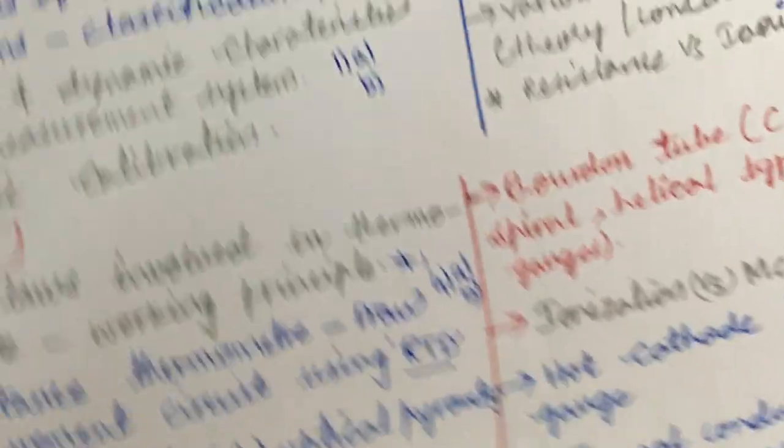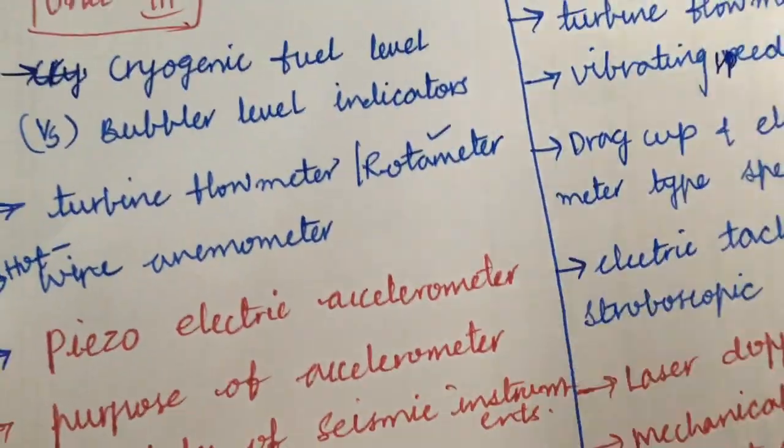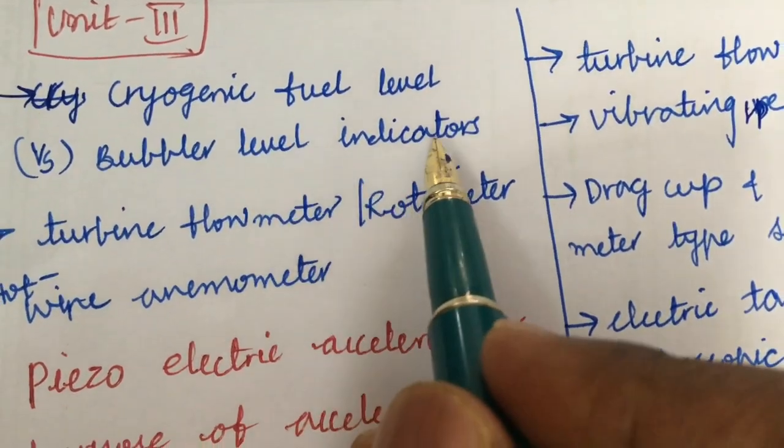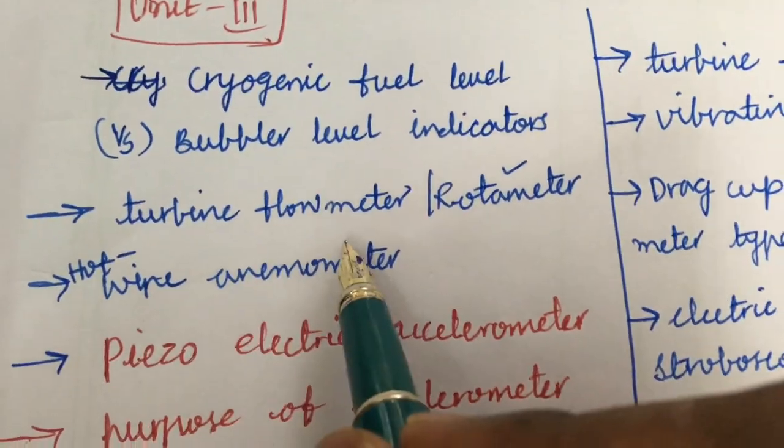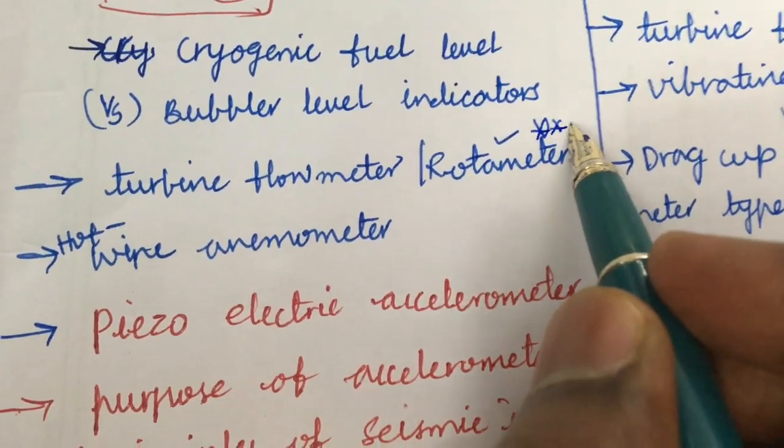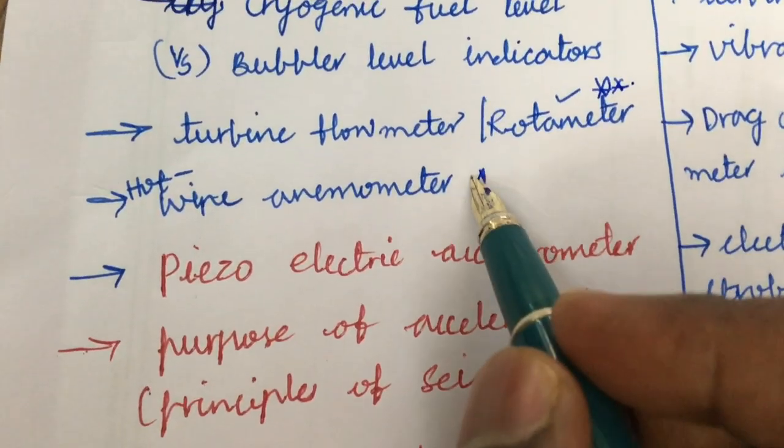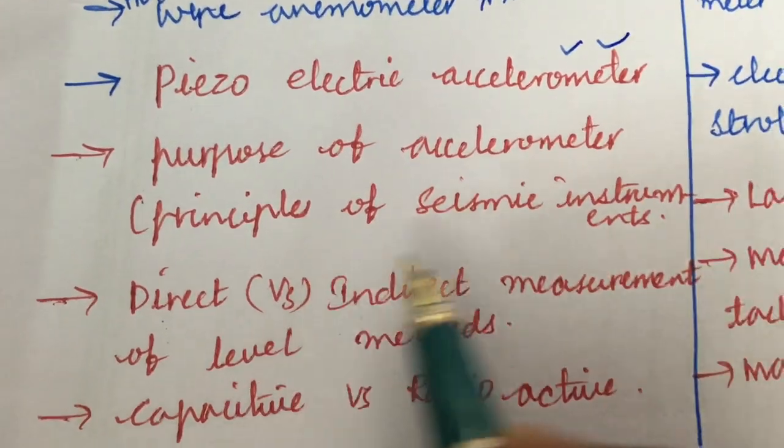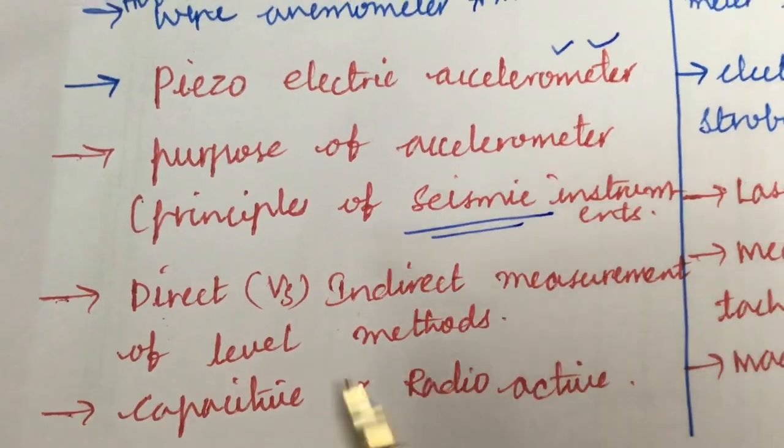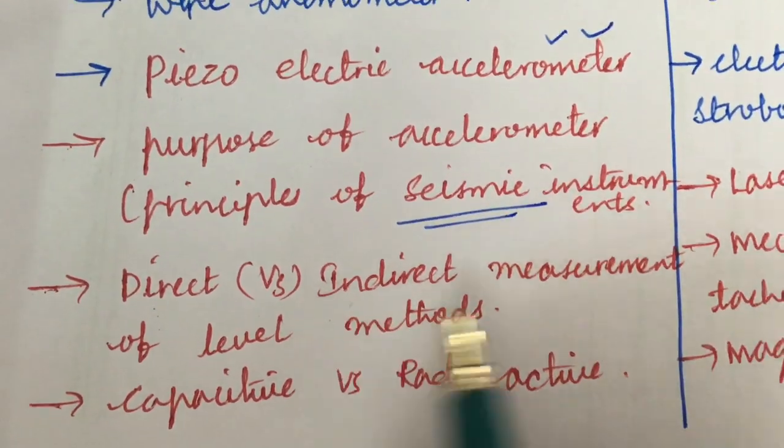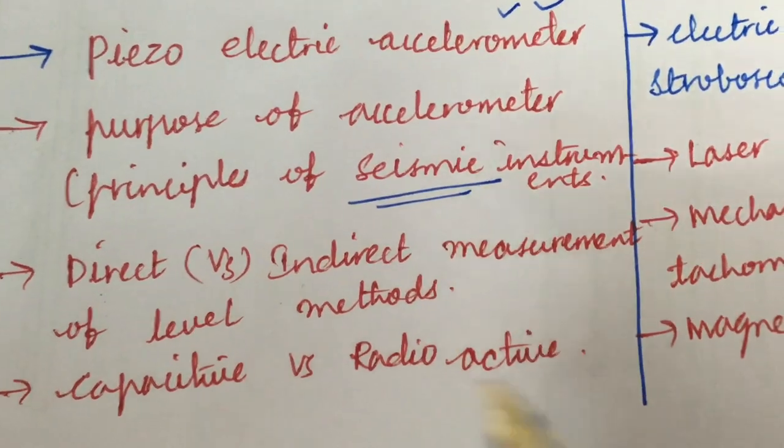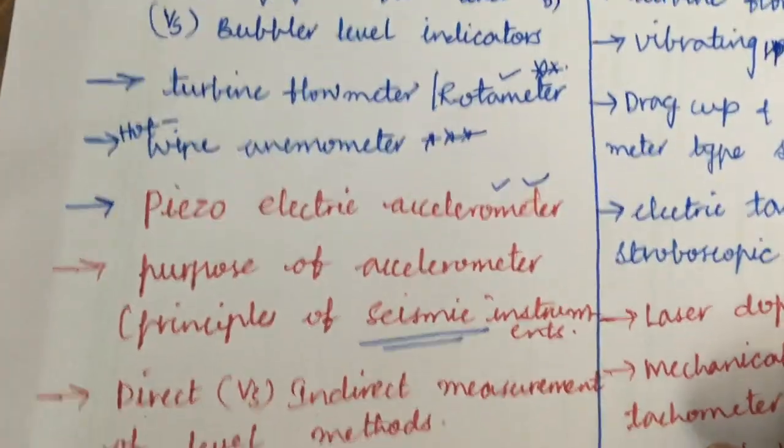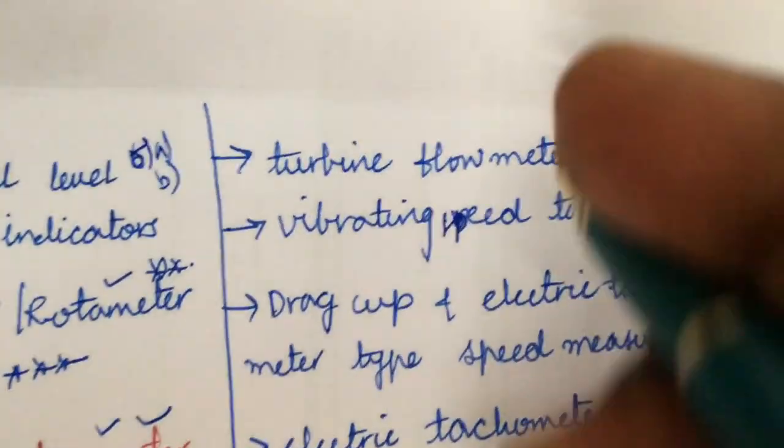Dear students, I have taken even the third unit. It is all about cryogenic fuel level versus bubbler level indicators and turbine flow meter. Rotameter is very very important and a sure shot question. And hot wire anemometer is also very very important and piezoelectric accelerometer and the purpose of accelerometer, principle of seismic instruments may be asked this time. Direct versus indirect measurement of level methods and capacitance versus radioactivity. This may be the 6, 5A as well as 5B.